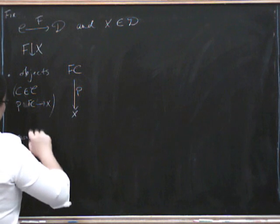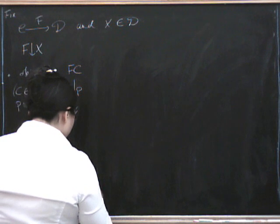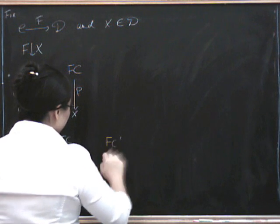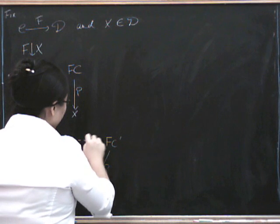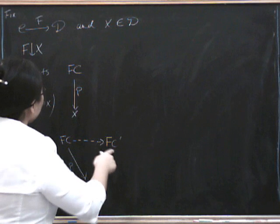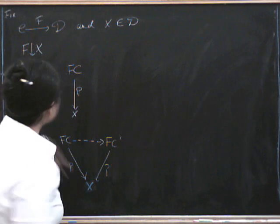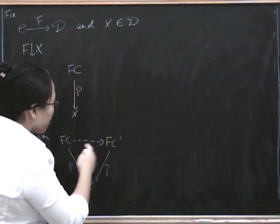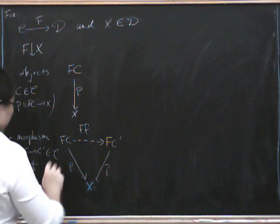So now what's a morphism going to be? Let's write down what two of these things look like. So here's our X at the bottom that stays fixed. Perhaps I'll put it in blue again. This X at the bottom stays fixed. And we've got an F of C and we've got an F of C prime and morphisms going down to X. And so you might think that a morphism should be a morphism making this triangle commute. But we have to be a little bit careful. It's not any old morphism from here to here. A morphism really ought to be a morphism in C together with some condition. So what it's going to be is a morphism F from C to C prime in the category C such that F of it makes this triangle commute.